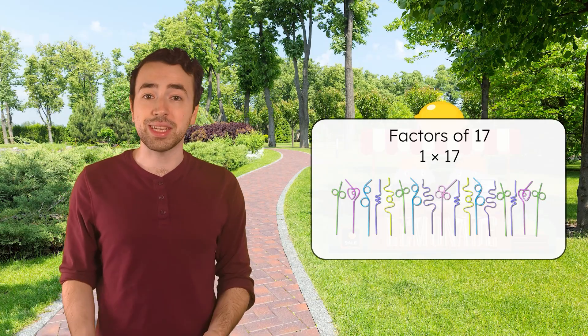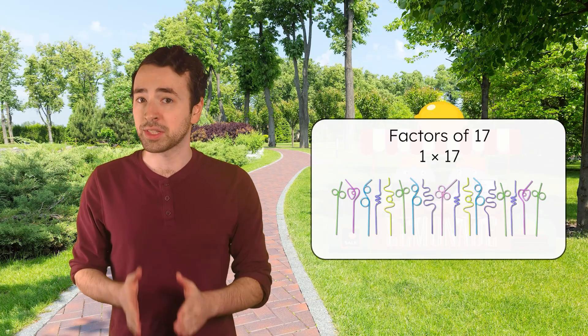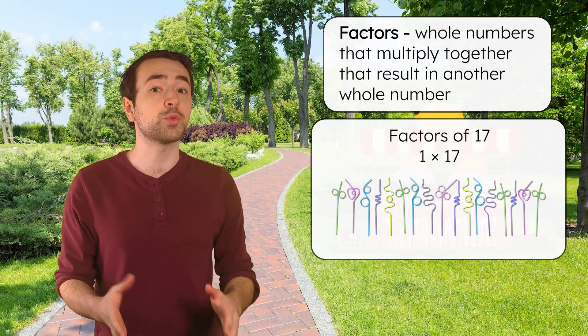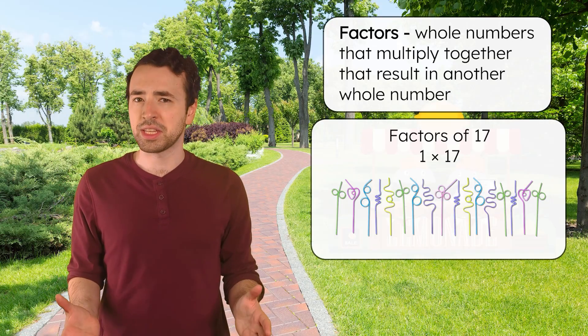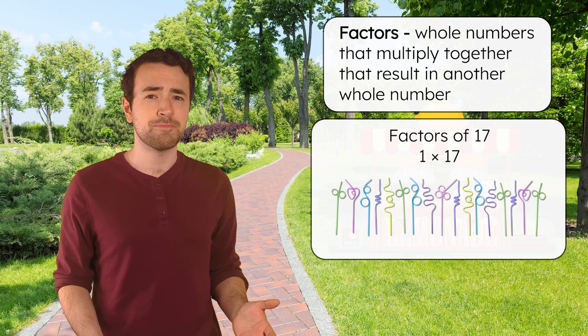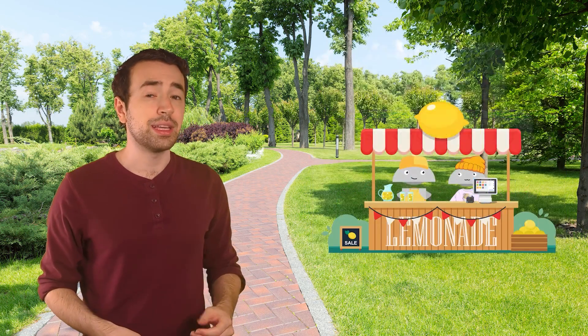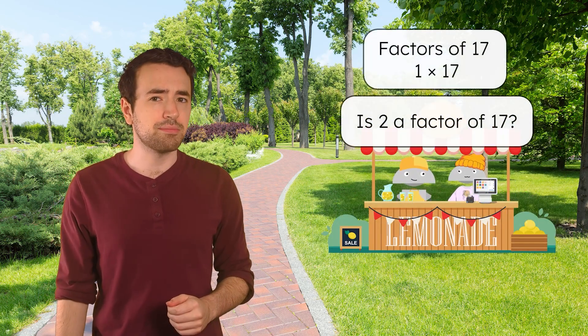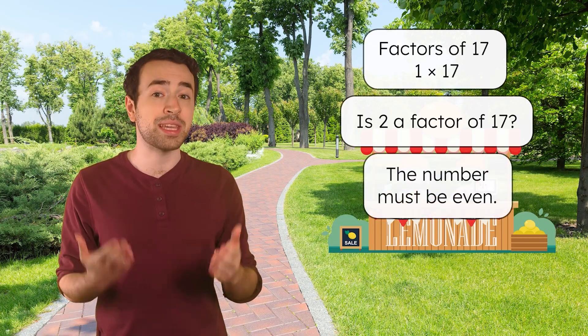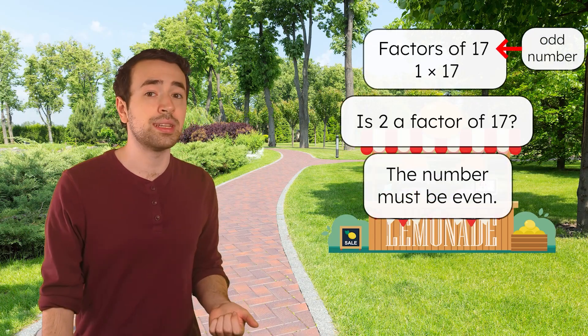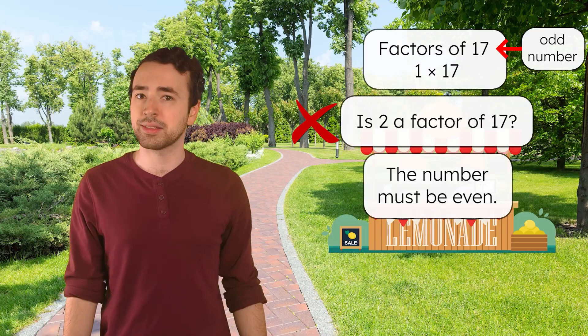We already know one group of 17 silly straws works, so 1 and 17 are factors of 17. They're the whole numbers we can multiply to equal another number. Does 17 have any other factors? Let's test it out. Is 2 a factor of 17? For 2 to be a factor, the number has to be even, and since 17 is odd, 2 is not a factor.